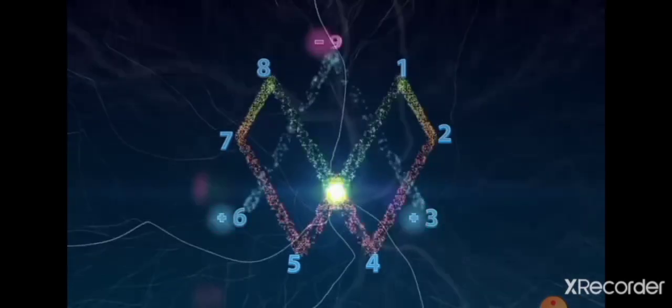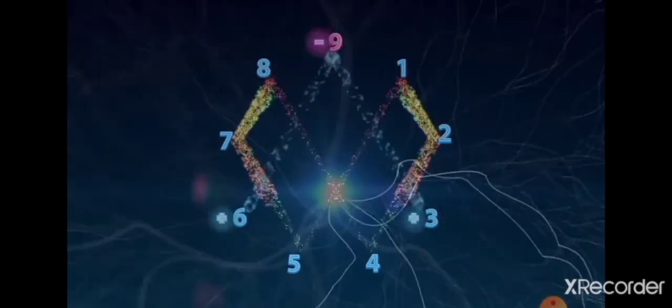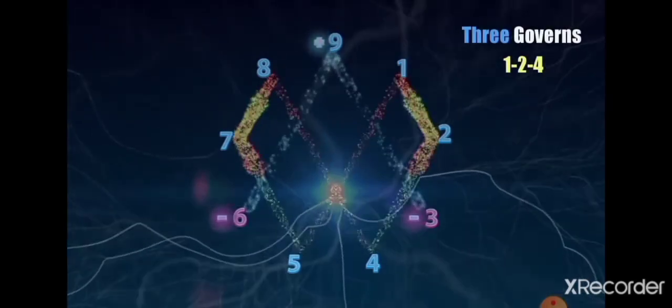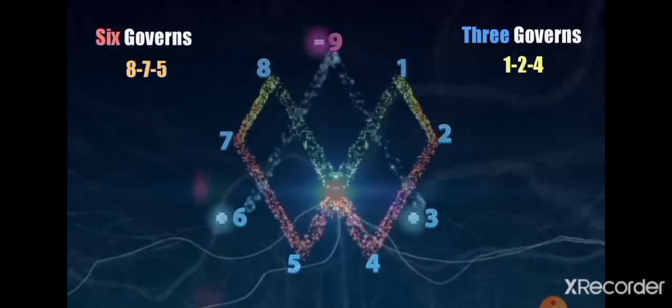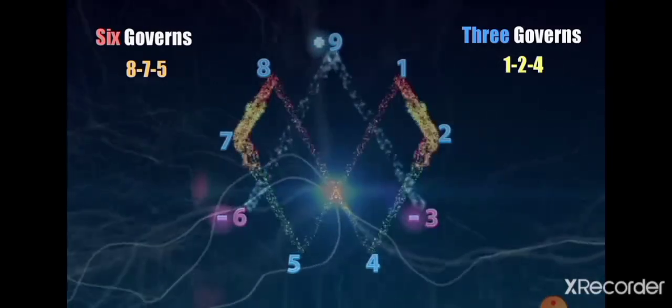And if you could imagine the movement as something like the symbol for infinity. However, these two sides are governed by 3 and 6. 3 governs 1, 2 and 4, while 6 governs 8, 7 and 5. And if you look at the pattern closely, it gets even more interesting.